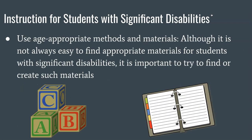Using age-appropriate methods and materials — although it's not always easy to find appropriate materials for students, it's important to try to find or create such materials. Trying to use age-appropriate things geared down to their level. So it's still talking about topics that a 13 or 14-year-old is interested in, but we might be teaching a skill that we'd be teaching to a 4 or 5-year-old. It's really important to gear what we're doing to our students.